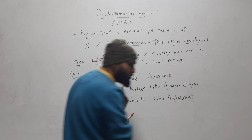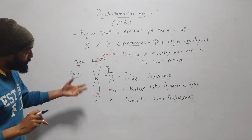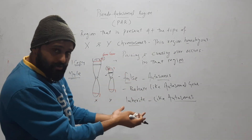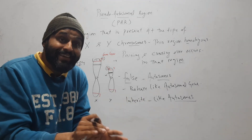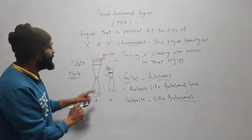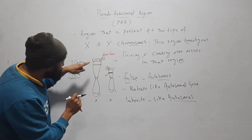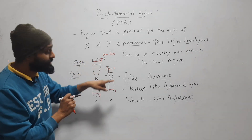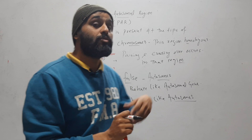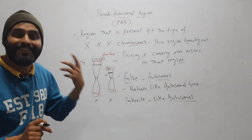In females, they have two X chromosomes, but that is not the relevant case here. In males, genes on the pseudo autosomal region have two copies because they are present on both X and Y. So they inherit like autosomal region genes — that is why it is called the pseudo autosomal region.